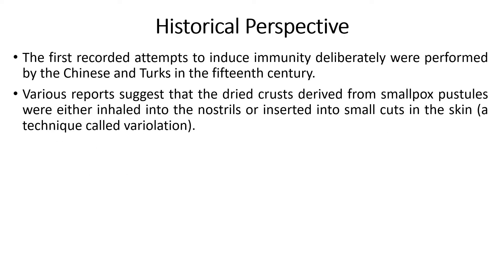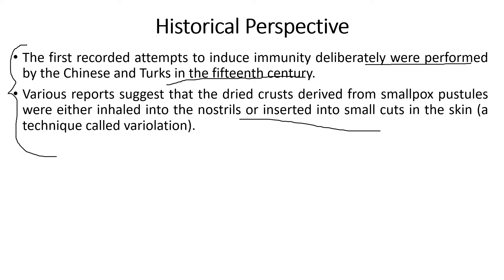The first recorded attempts to deliberately induce immunity were performed by the Chinese and Turks in the 15th century. Various reports suggest that dry crusts developed from smallpox pustules were either inhaled into the nostrils or inserted into small cuts in the skin. This technique is known as variolation, done to understand how the body works and how it responds.